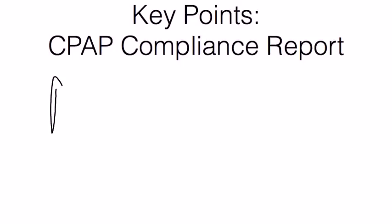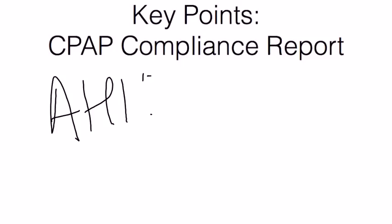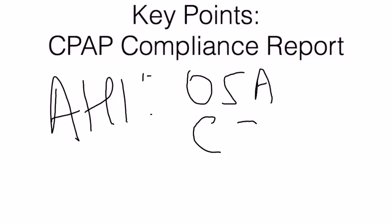The next number to look at is the AHI, or the apnea-hypopnea index. Most machines will tell you what the AHI is, and some machines are even more intelligent — they'll tell you the number of obstructive events, signifying obstructive sleep apnea AHI, and even central sleep apnea events, indicating central events as well.